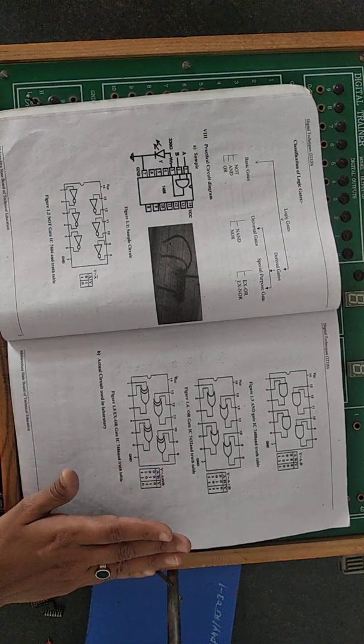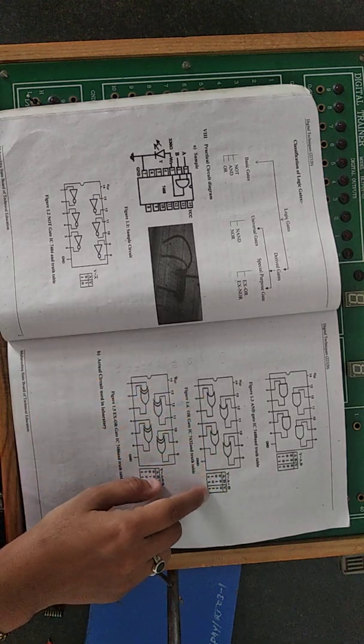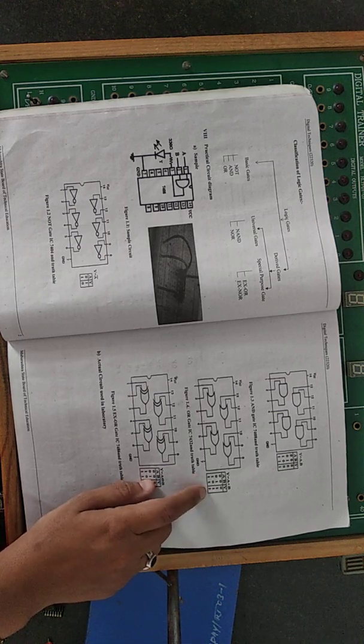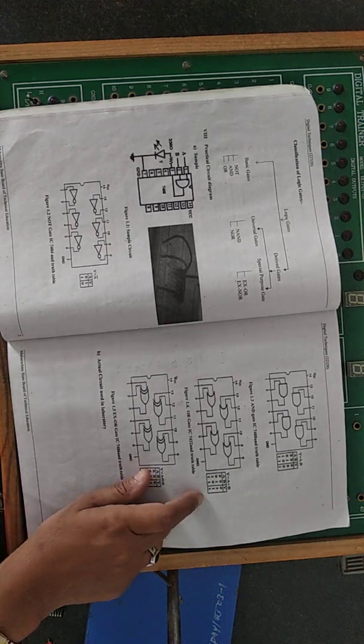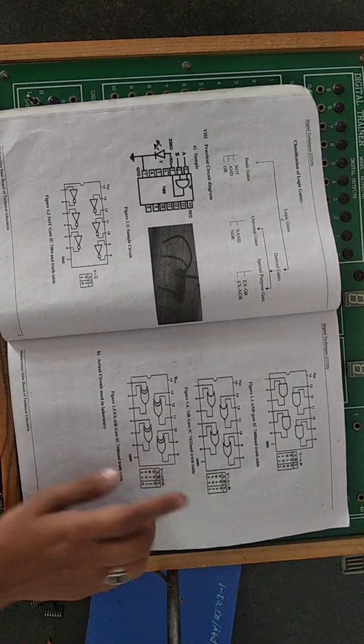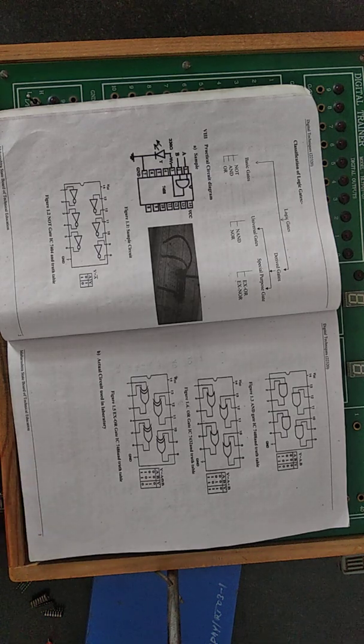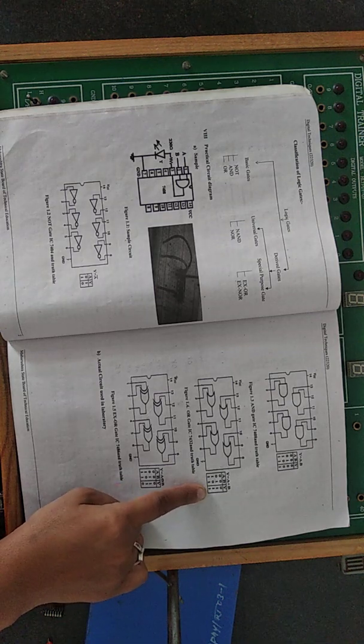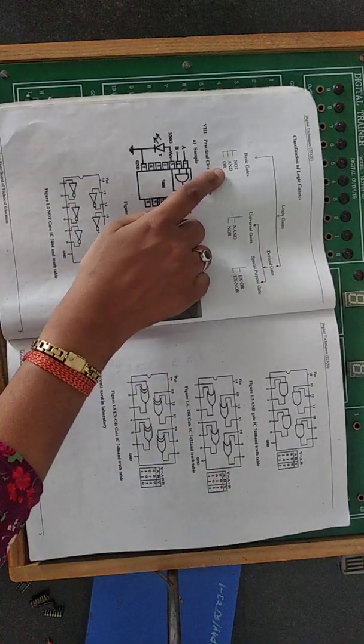But here, logic gates follow Boolean logic. In Boolean logic, 1 plus 1 equals 1. This is addition, but single bit addition. Only this condition is different: 1 plus 1 equals 1. This is Boolean expression. Boolean logic is followed in digital systems, where 1 plus 1 equals 1. This is the difference. In binary logic, 1 plus 1 will be 0 carry 1. But here, 1 plus 1 equals 1. It follows the rule A plus B. These are the three basic gates.